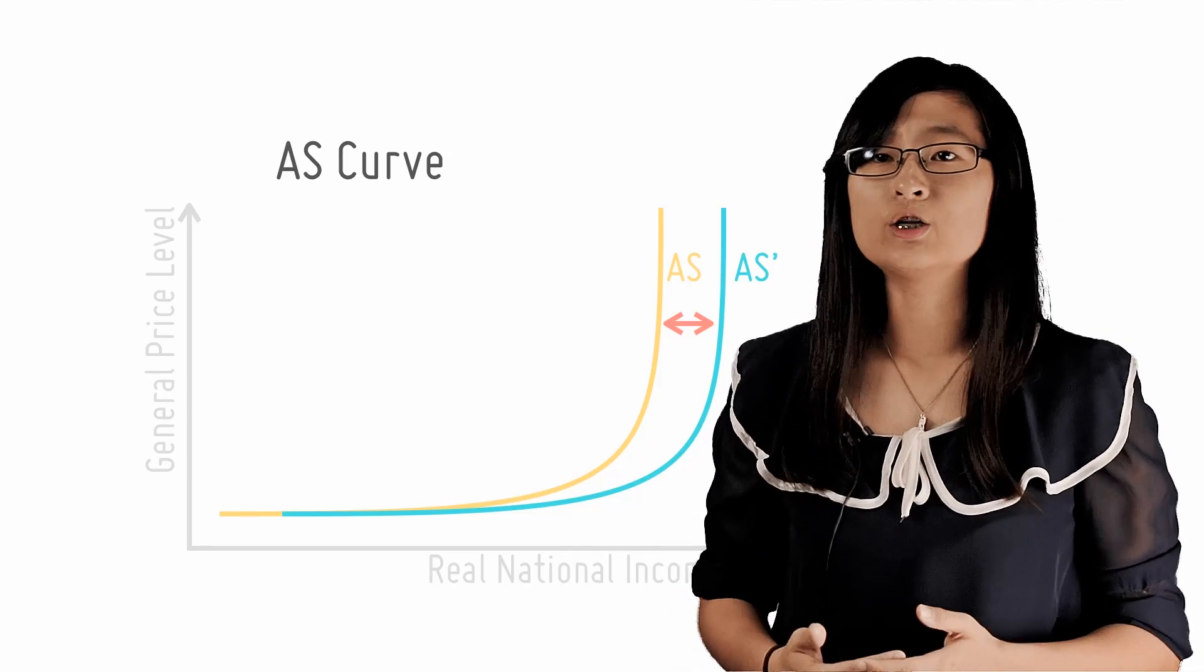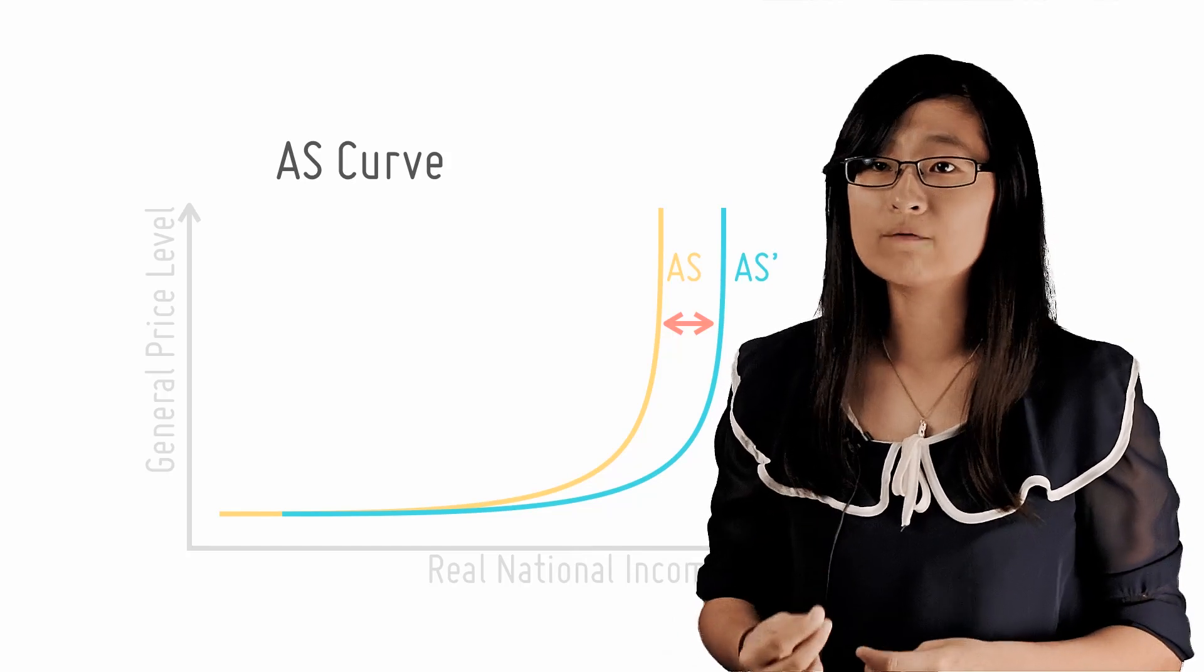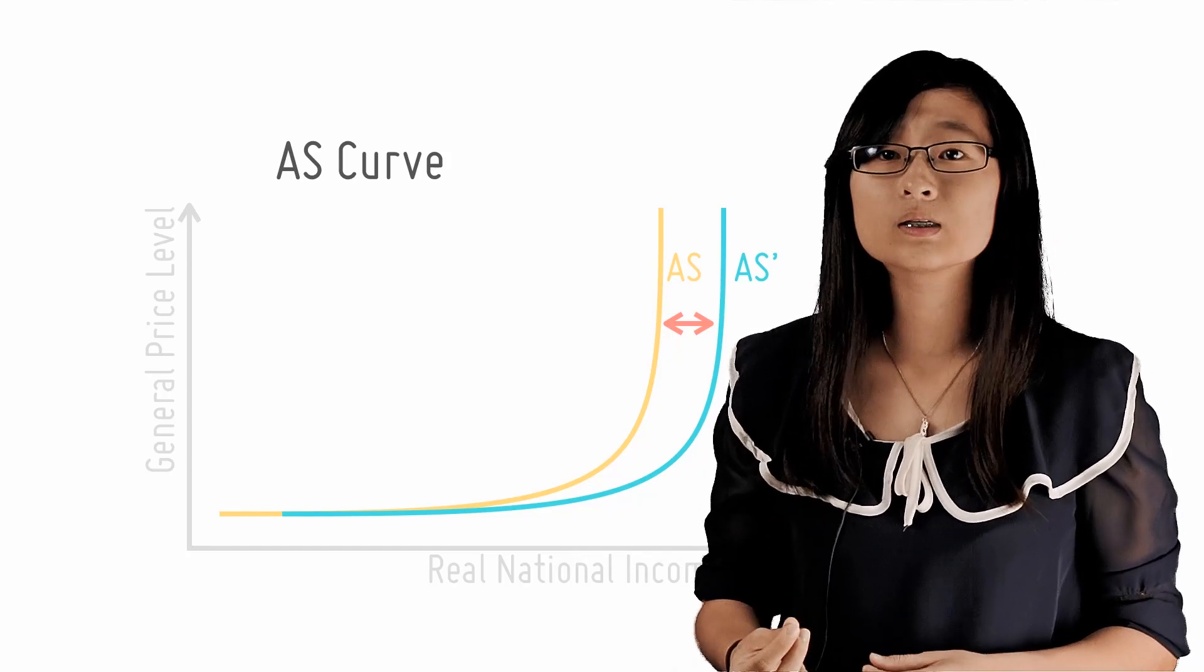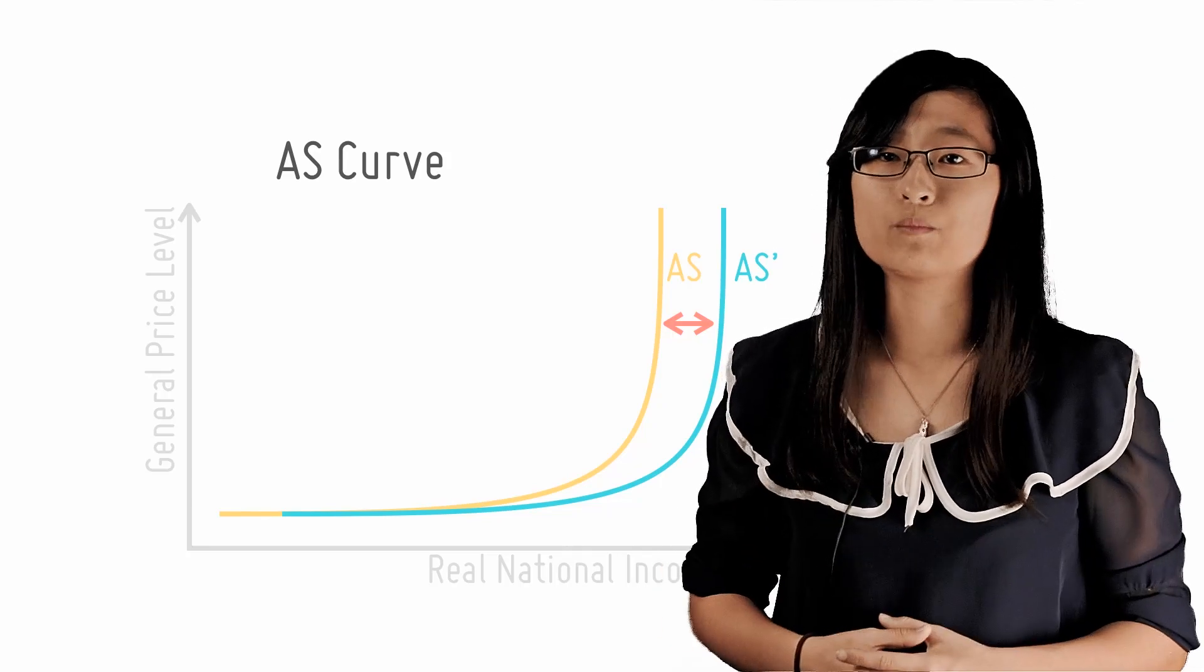Since the classical range denotes full employment level of output in the economy, it is affected by factors that impact the maximum amount of goods and services a country can produce.